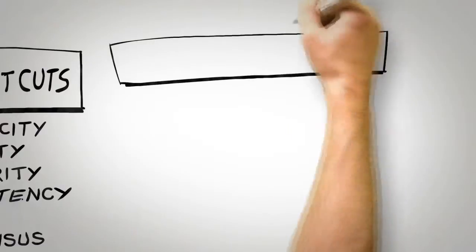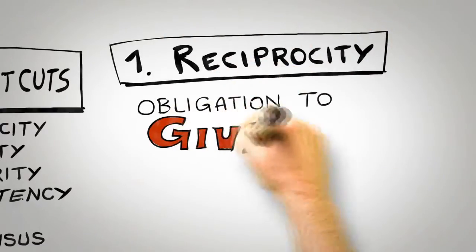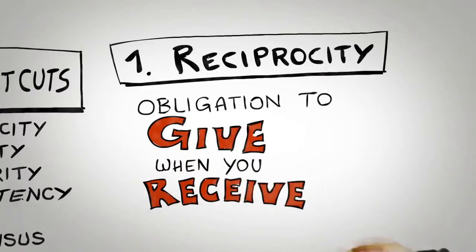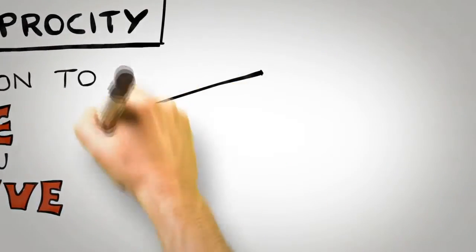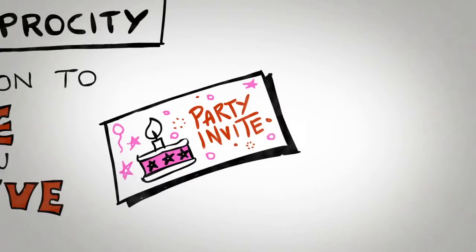The first universal principle of influence is reciprocity. Simply put, people are obliged to give back to others the form of behavior, gift, or service that they have received first. If a friend invites you to their party, there's an obligation for you to invite them to a future party you are hosting. If a colleague does you a favor, then you owe that colleague a favor.